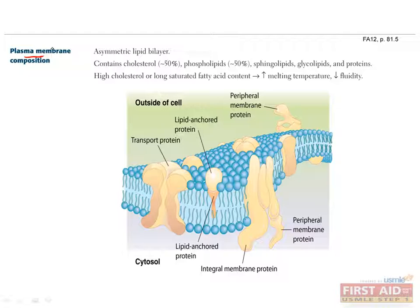The plasma membrane separates the inside of the cell from the outside and is also responsible for mediating interactions between cells. As you can see in this image, it's asymmetric, so one side may not look like the other. It's mostly composed of an even mixture of cholesterol and phospholipids, but also contains some sphingolipids, glycoproteins, and proteins.